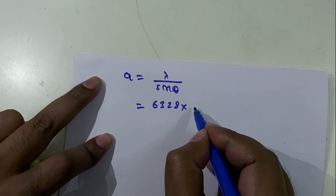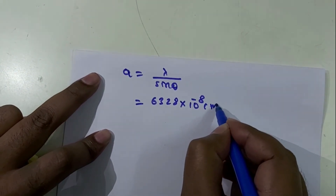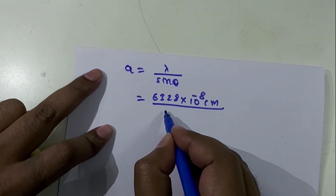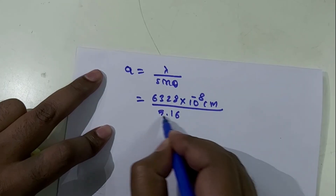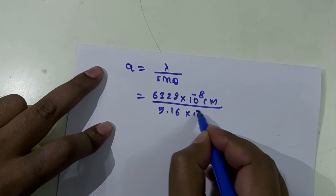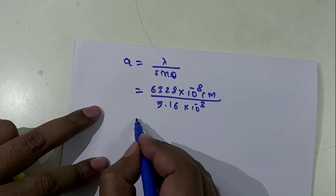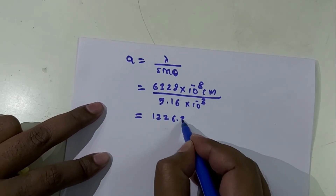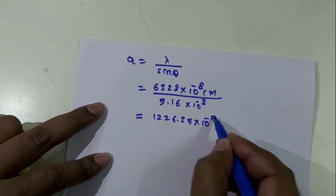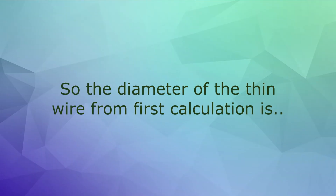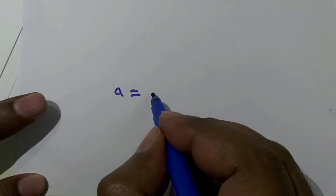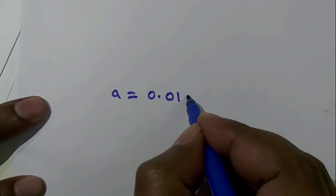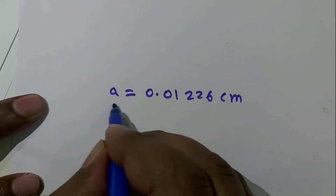Dividing by sinθ = 5.16 × 10⁻³, we get a = 1226.35 × 10⁻⁵ centimeters. Hence our final answer is 0.01226 centimeters. I hope you have enjoyed this video and learned new things from this experiment.